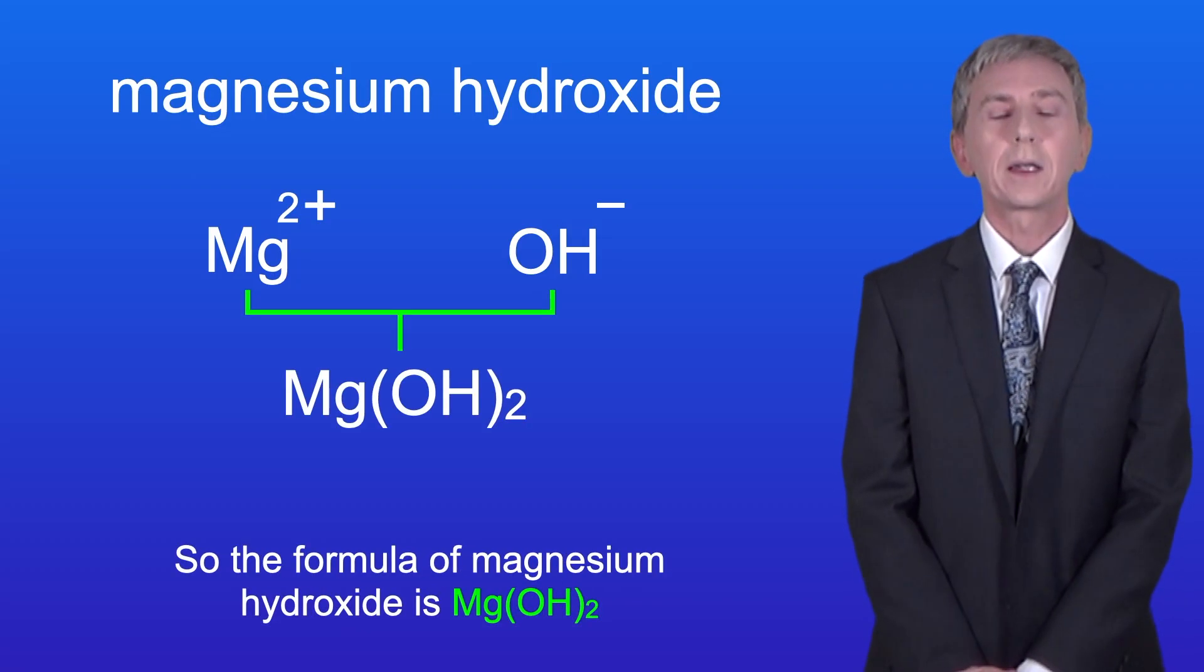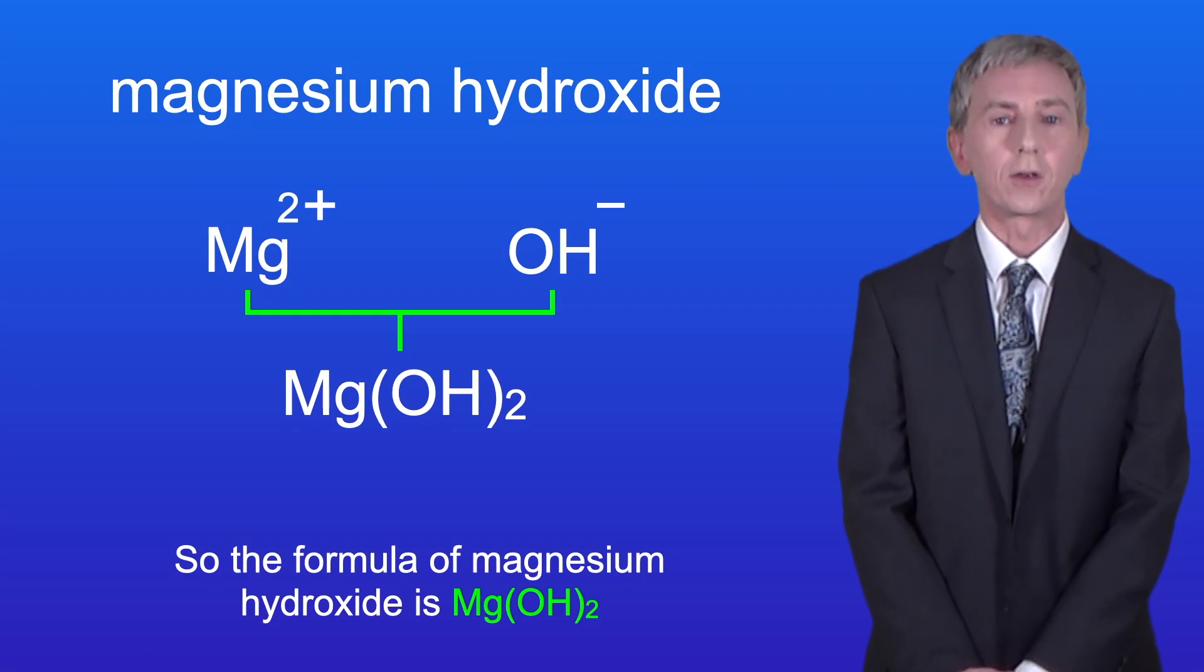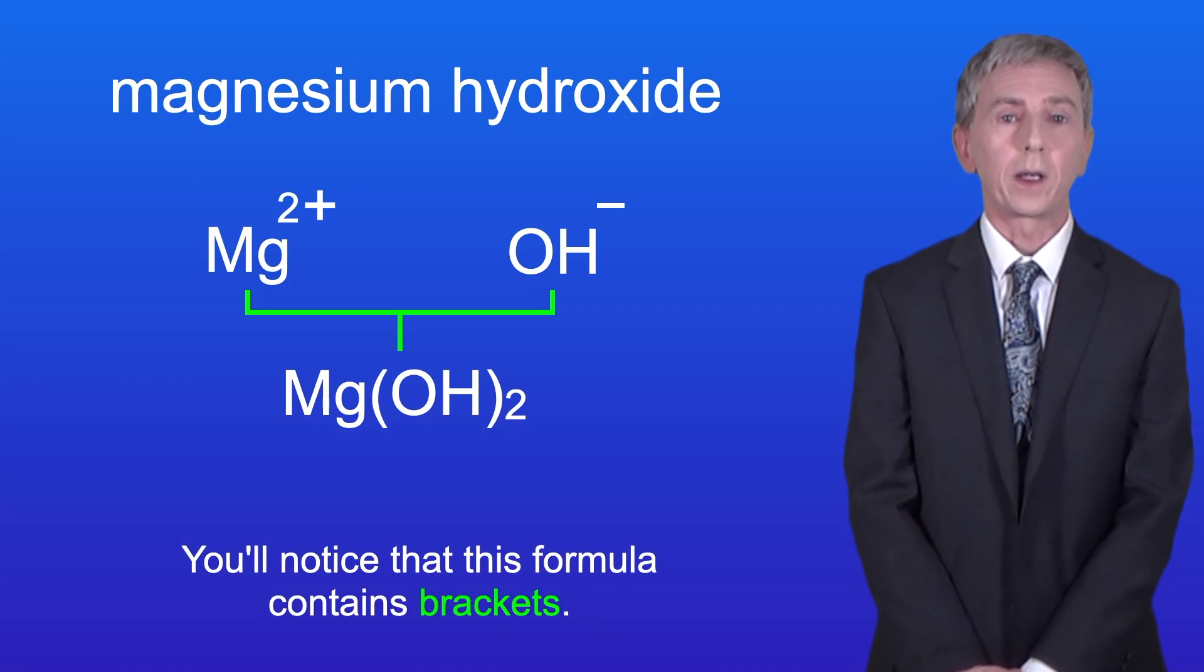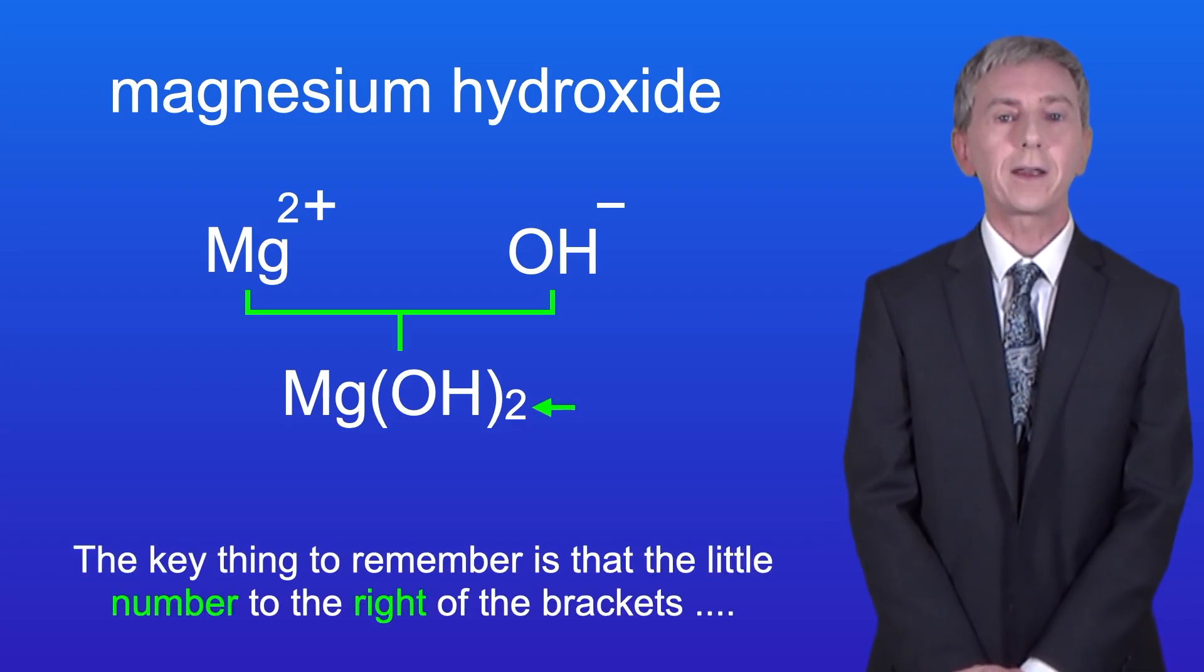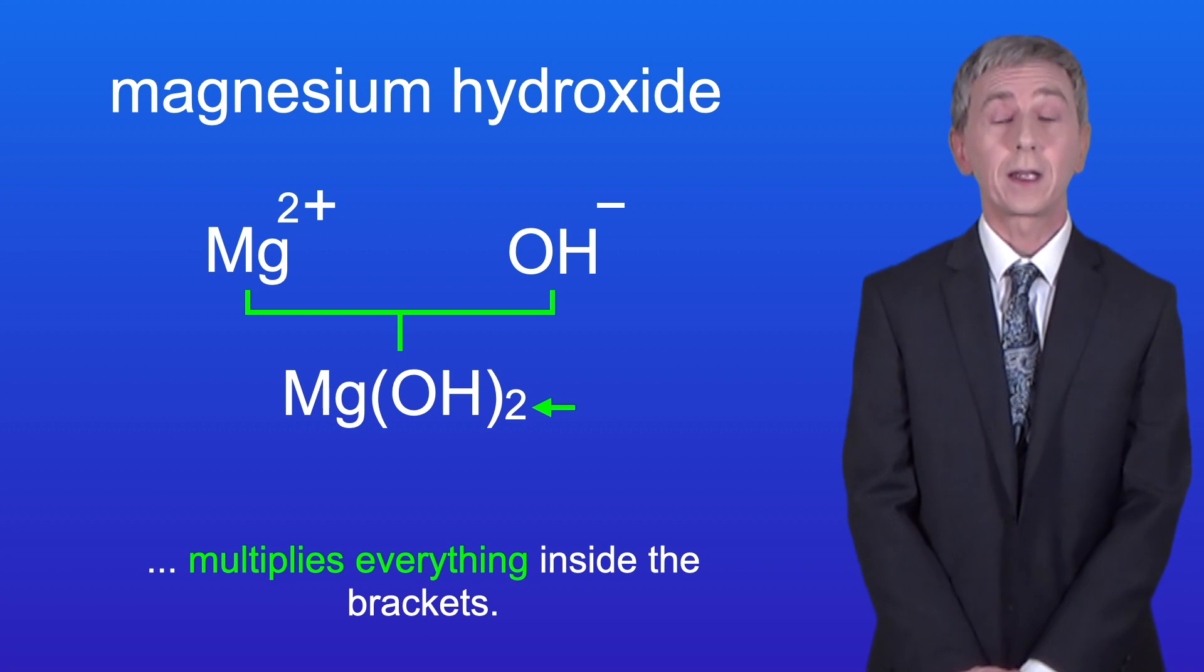So the formula of magnesium hydroxide is Mg(OH)2. Now you'll notice that this formula contains brackets and the key thing to remember is that the little number to the right of the brackets multiplies everything inside the brackets.